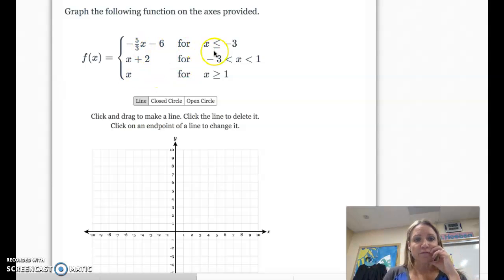All right, so let's start with the first one, which is coming from less than negative 3. So think of it as coming from negative infinity up to negative 3. Up to this point, we have this line negative 5 thirds x minus 6.